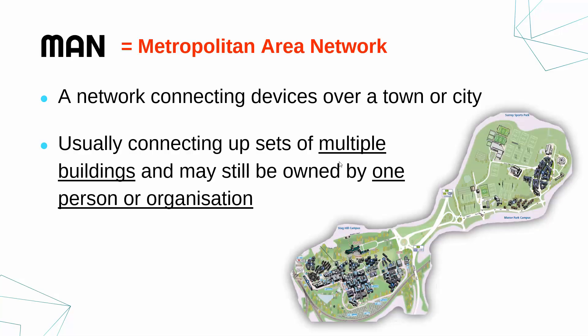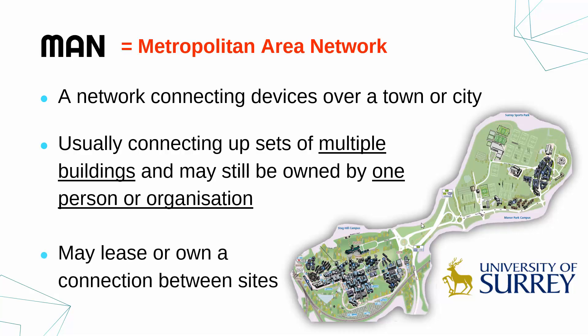Universities often have multiple campuses. This is a map of the University of Surrey, which is where I went. It's got quite a big campus and a couple of smaller separate campuses. Because they're running the same software and using the same systems, there may be a connection between the campuses despite being a couple of miles apart — and the gap is much bigger than it looks on the map. The University of Surrey might own the connection between campuses, or they might lease it — a very small lease line perhaps.